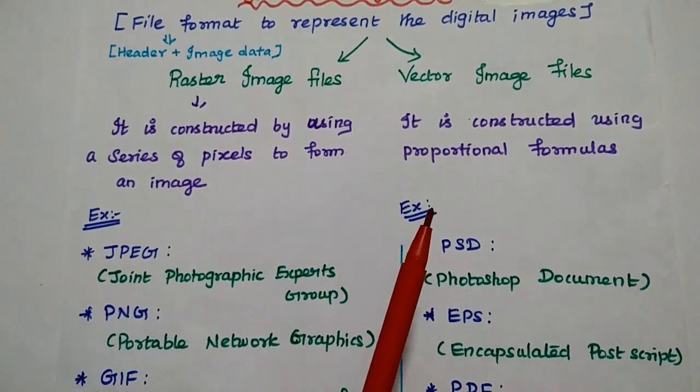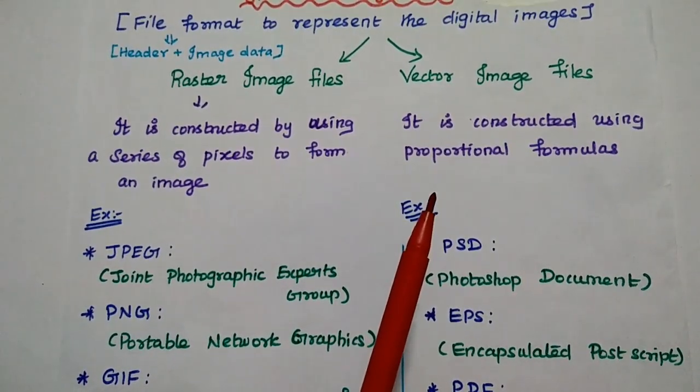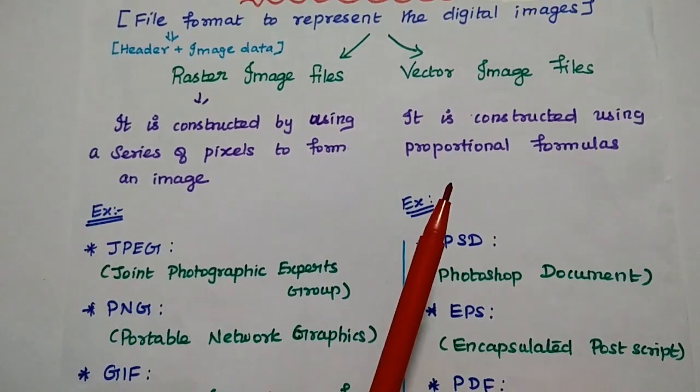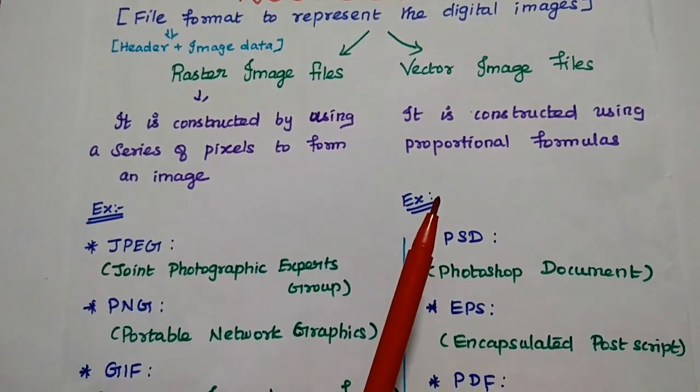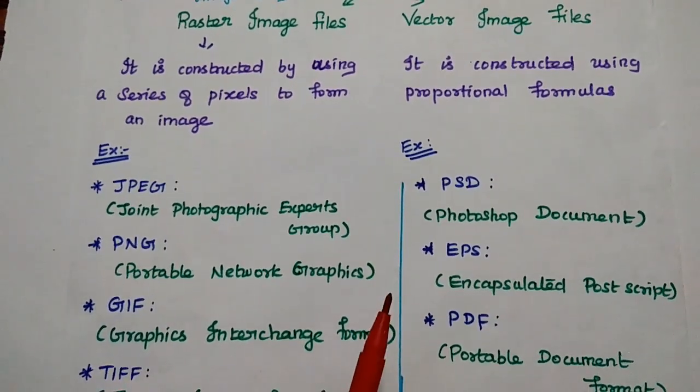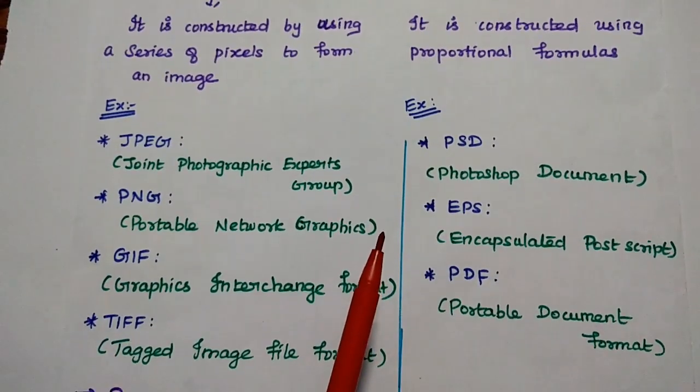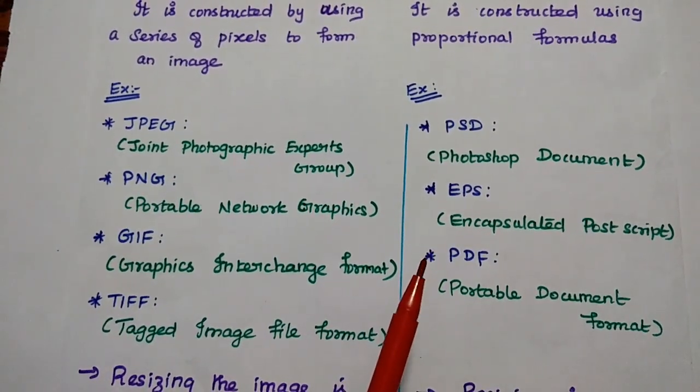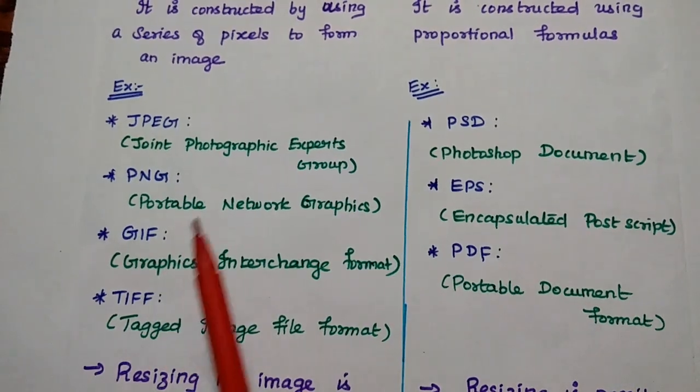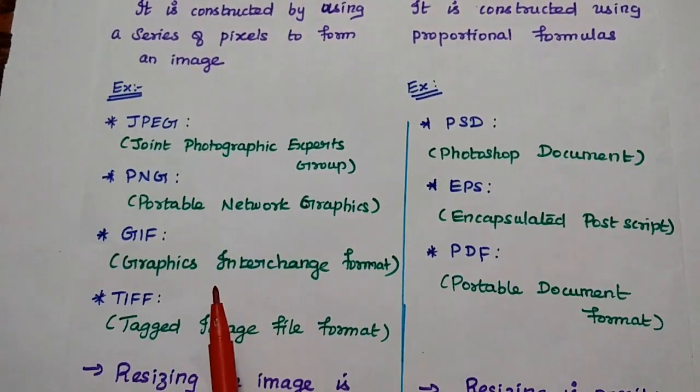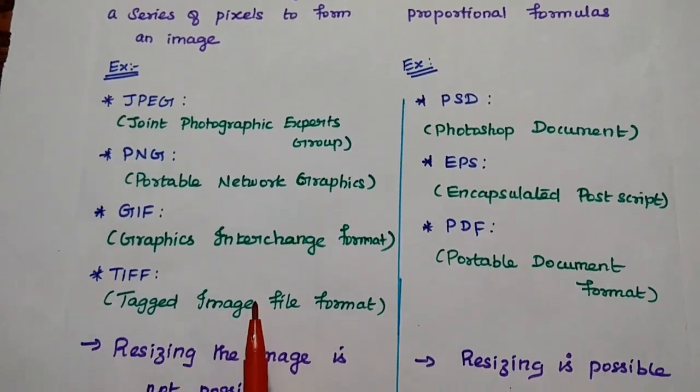The next one is vector image files. In this, that image can be constructed using proportional formulas like mathematical formulas. For example, we can say the Photoshop document, encapsulated postscript that is EPS document, PDF, scanned files - everything coming under vector image files. Here, the JPEG, PNG, GIF and TIFF - this all are coming under raster image files.